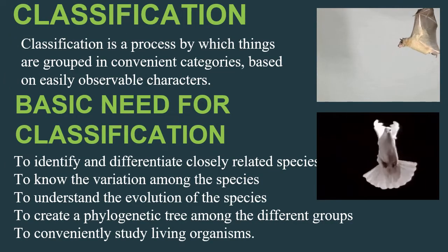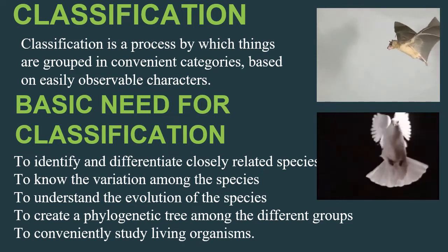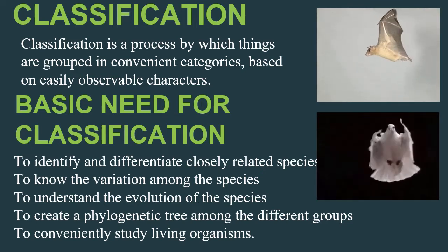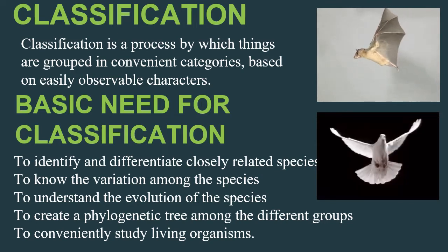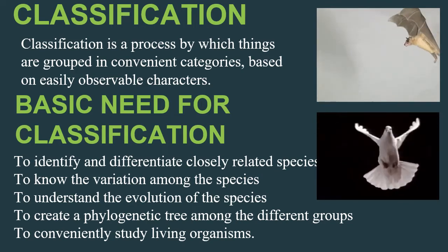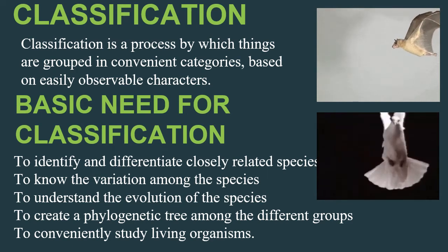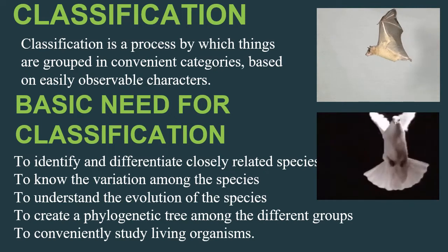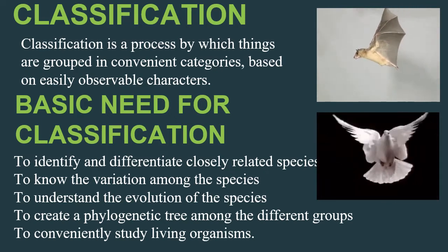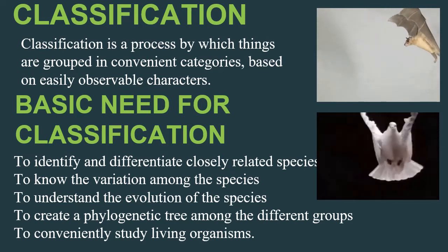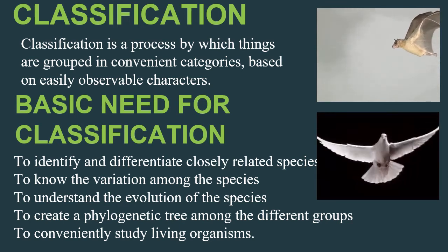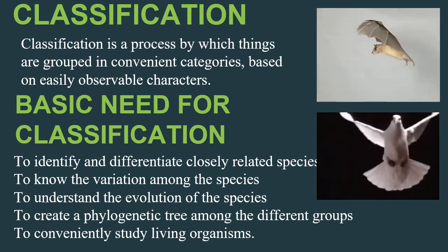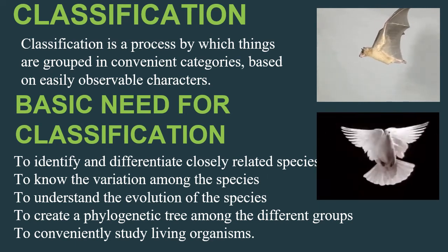Now I am going to explain about classification. Classification is a process by which things are grouped into convenient categories based on easily observable characters. Scientists analyze animals morphologically, anatomically, and physiologically, and according to similarities and dissimilarities, they classify the animals.